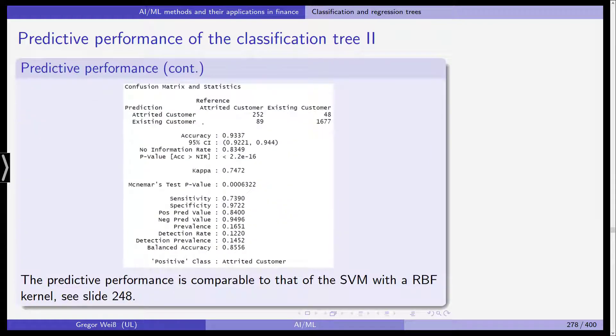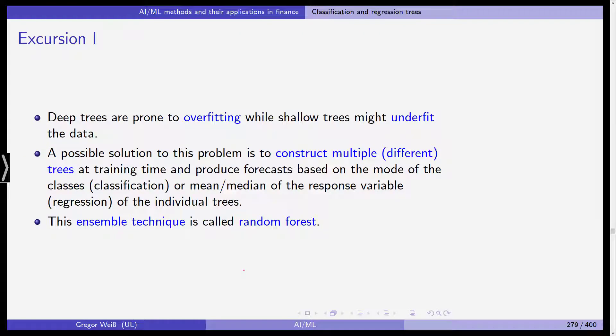We get in the confusion matrix 252 and 1677 customers which have been classified correctly. The accuracy thus is 93% with this confidence interval and corresponding information on the no information rate, kappa, sensitivity and so on. The predictive performance is actually comparable to the one of the support vector machine that uses a nonlinear radial kernel. See also slide 248, but we can do even more.